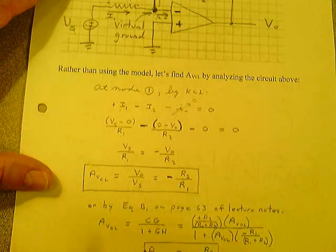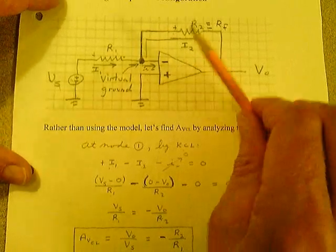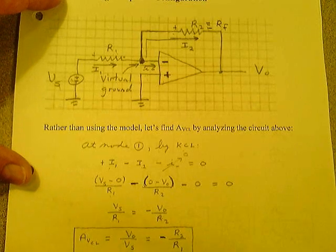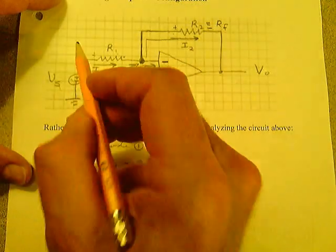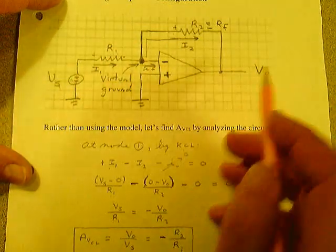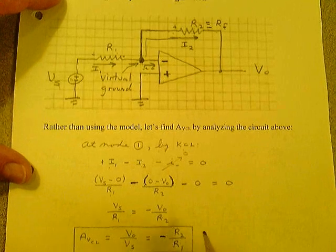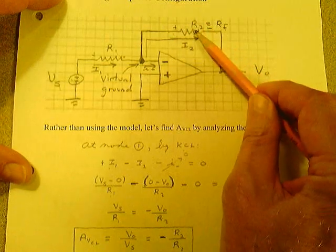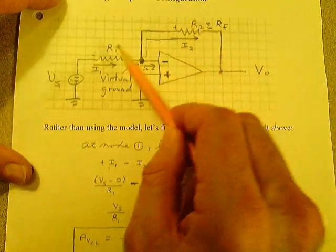The voltage gain of this configuration is the feedback resistor divided by R1, and it's a negative gain. All that means is if you have a positive voltage in, you get a negative voltage out — if a sine wave goes positive in, it goes negative here. It's a 180-degree phase shift. The gain is simply negative R2 over R1, the feedback resistor divided by R1.